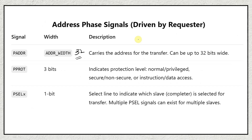Next we have PPROT. This is an optional signal — we did not discuss it in AHB protocol either. PPROT basically indicates a protection level such as normal, privileged, secure, non-secure, instruction, or data. This can be explored later.